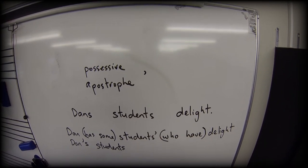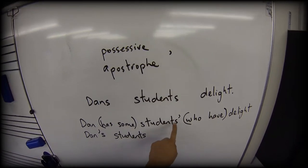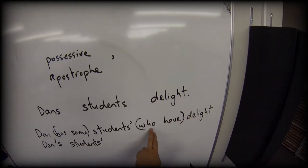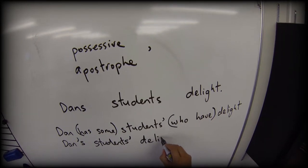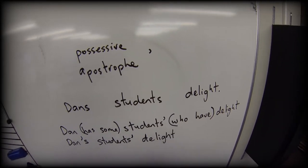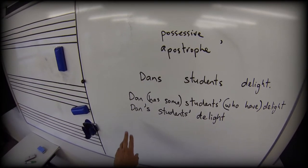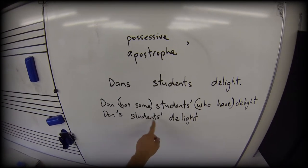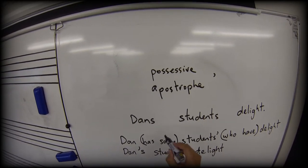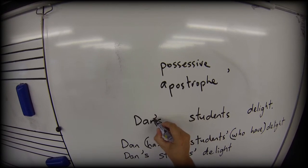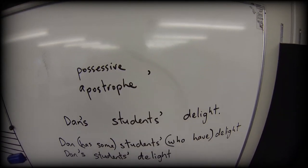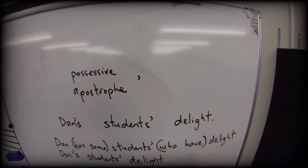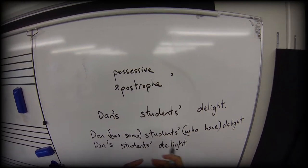So here we go. Students, apostrophe. I miss out 'who have,' and I finally end up with delight. So you'll see now that my phrase is Dan's students' delight. So I can go back here and say Dan's apostrophe S, students' final apostrophe right at the end, and then delight. And I've got my phrase.